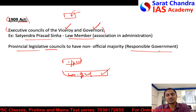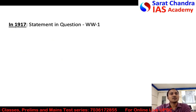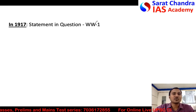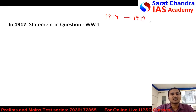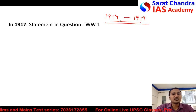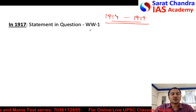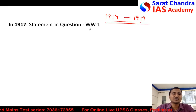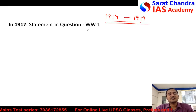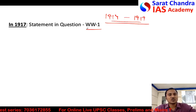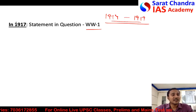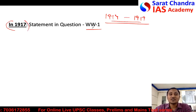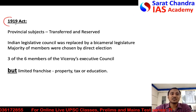The context changed in 1914 when World War One started, lasting till around 1920. The British wanted India's participation and support against strong Germany. To appease Indians, in 1917 they gave the statement referred to in the question — that the British government's aim is to increase responsible government and associate Indians in administration. This statement was given to gain Indian support, and subsequent acts did increase Indian participation in governance.